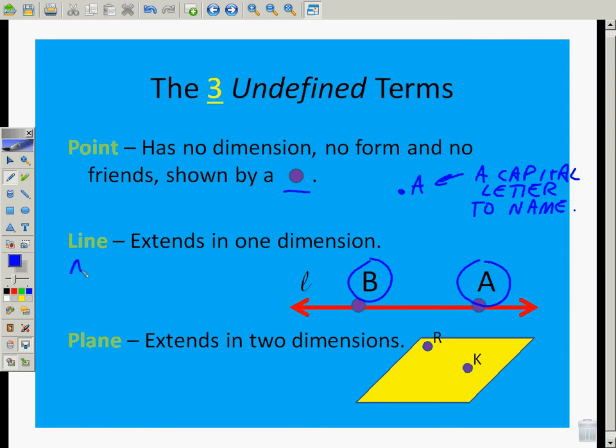And so we would name this AB. But not just AB. We put a little line on top of it because that little line tells us what it is. It's not a segment, which we'll talk about. It's not a ray, which we'll also talk about. It's a line because it has a little line on top of it. But we could also call it line BA. Or we could call it line L.